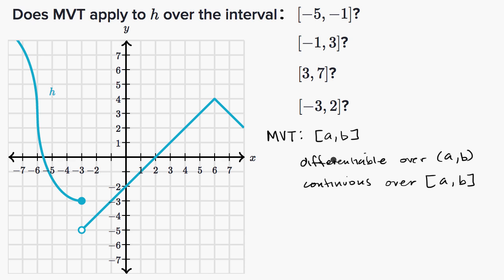Another way to think about it: if you're differentiable, you're definitely going to be continuous. So the second condition just makes sure that we're continuous at the endpoints of our closed interval. But if these conditions are met, then the mean value theorem tells us...